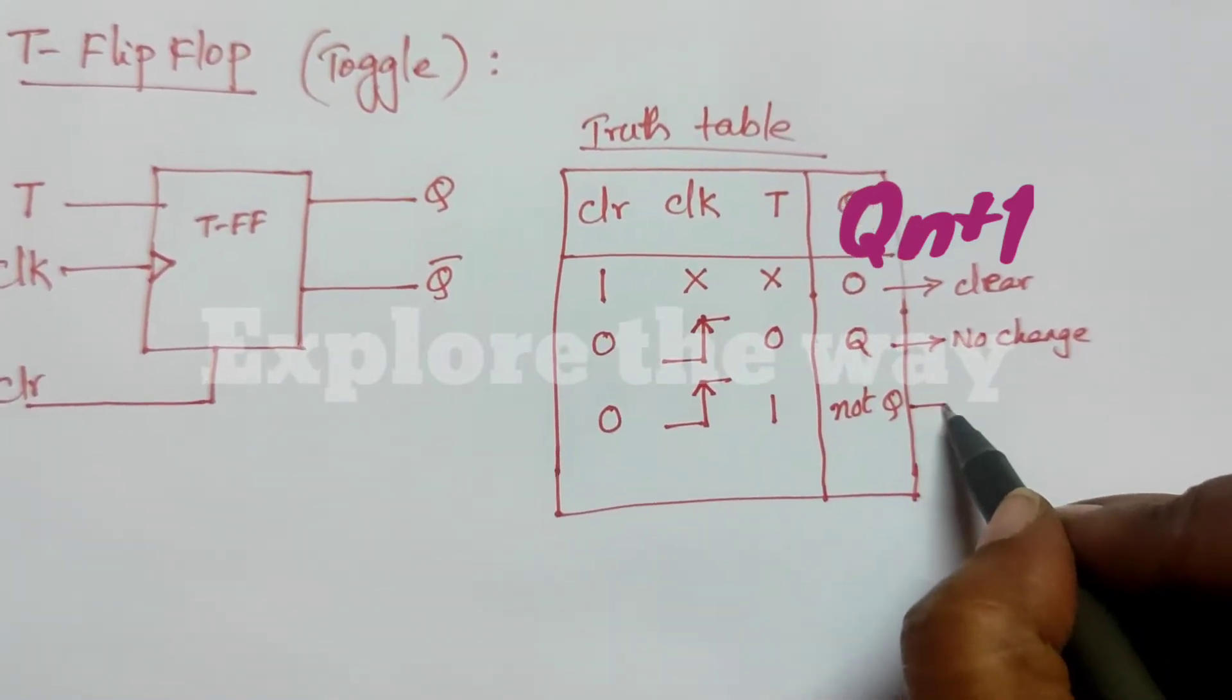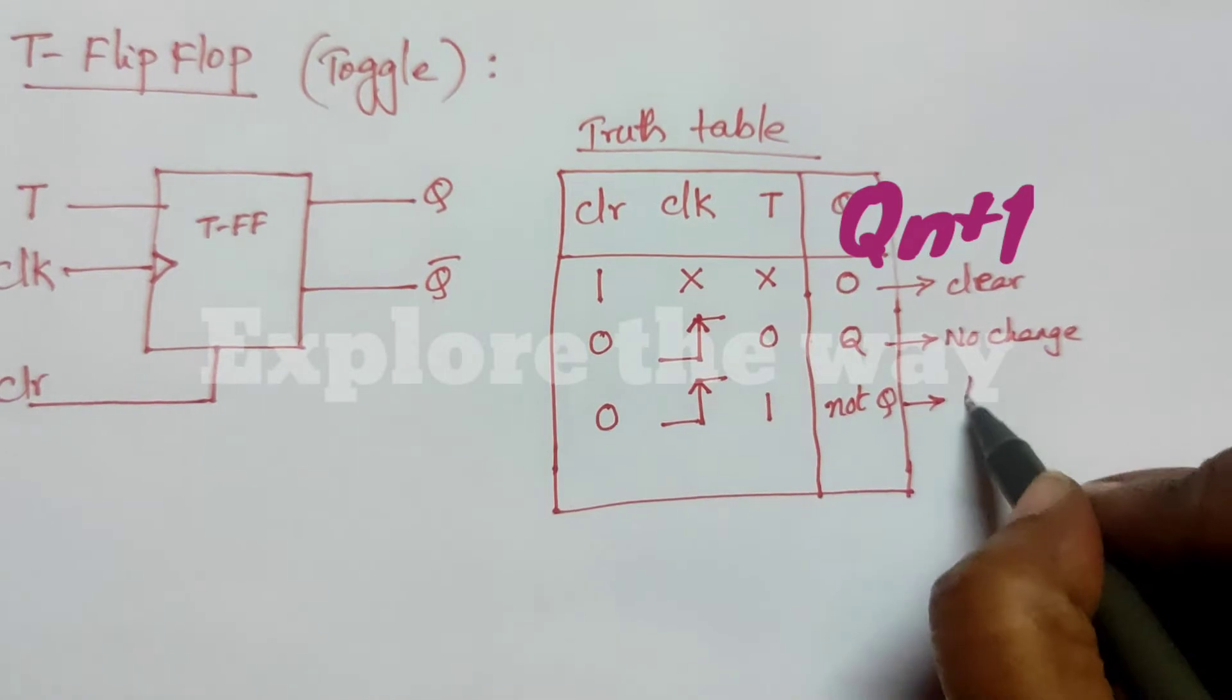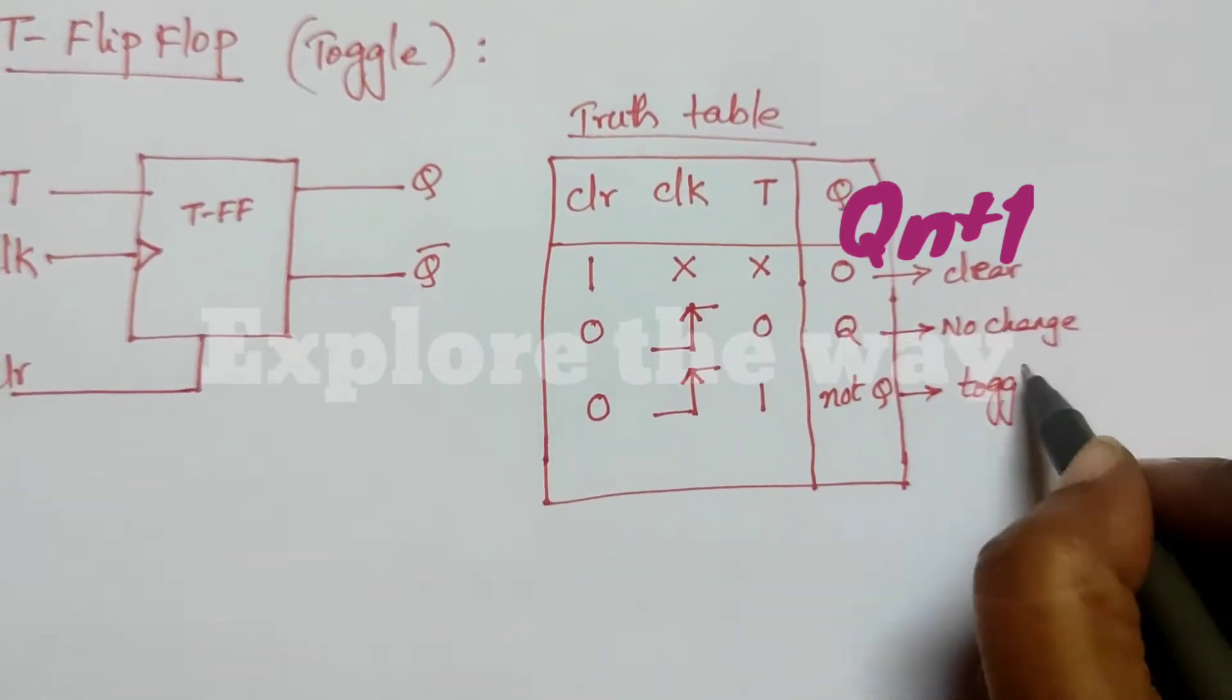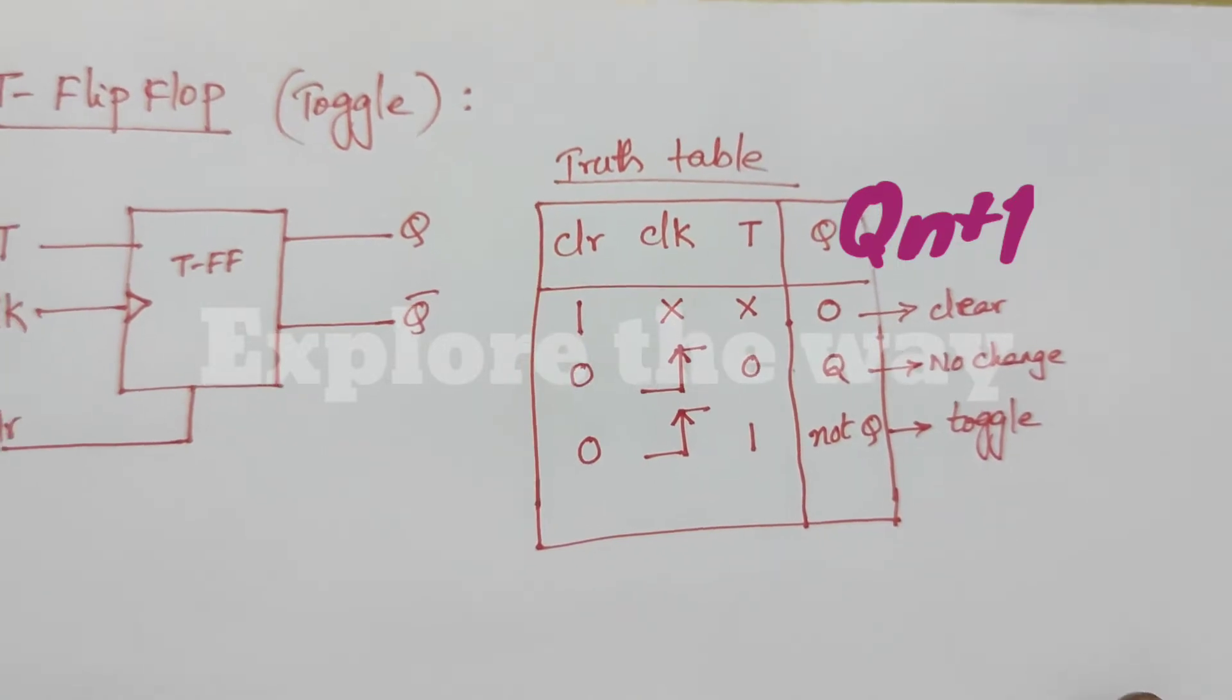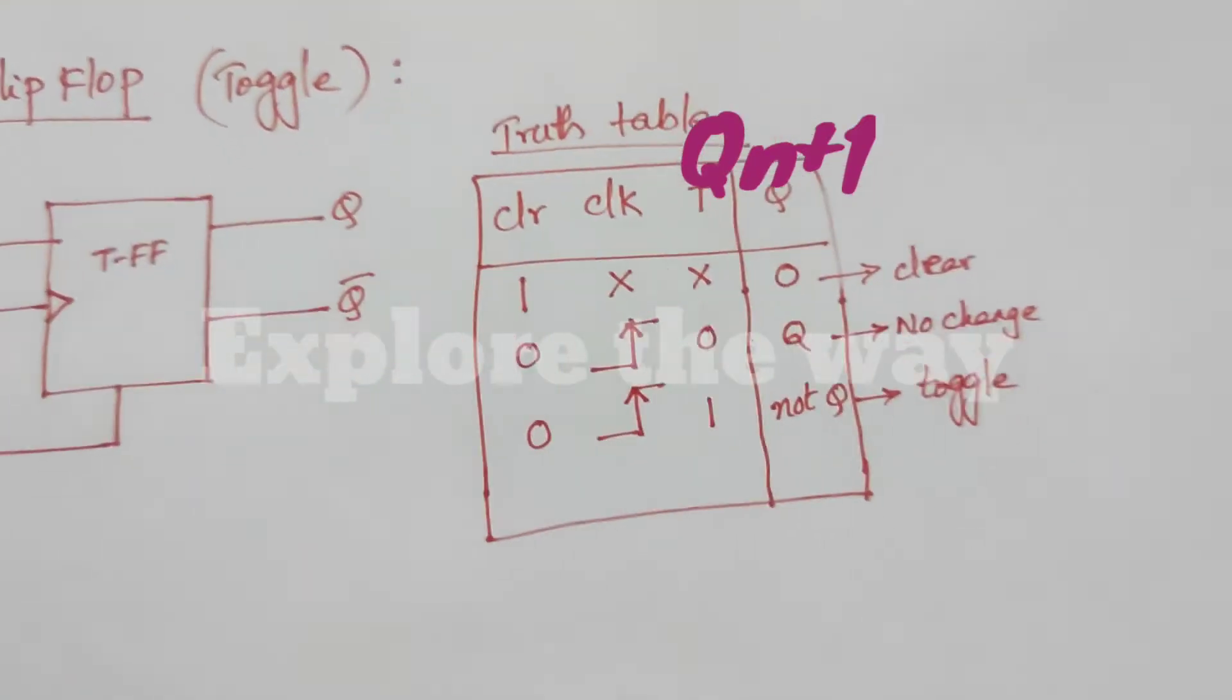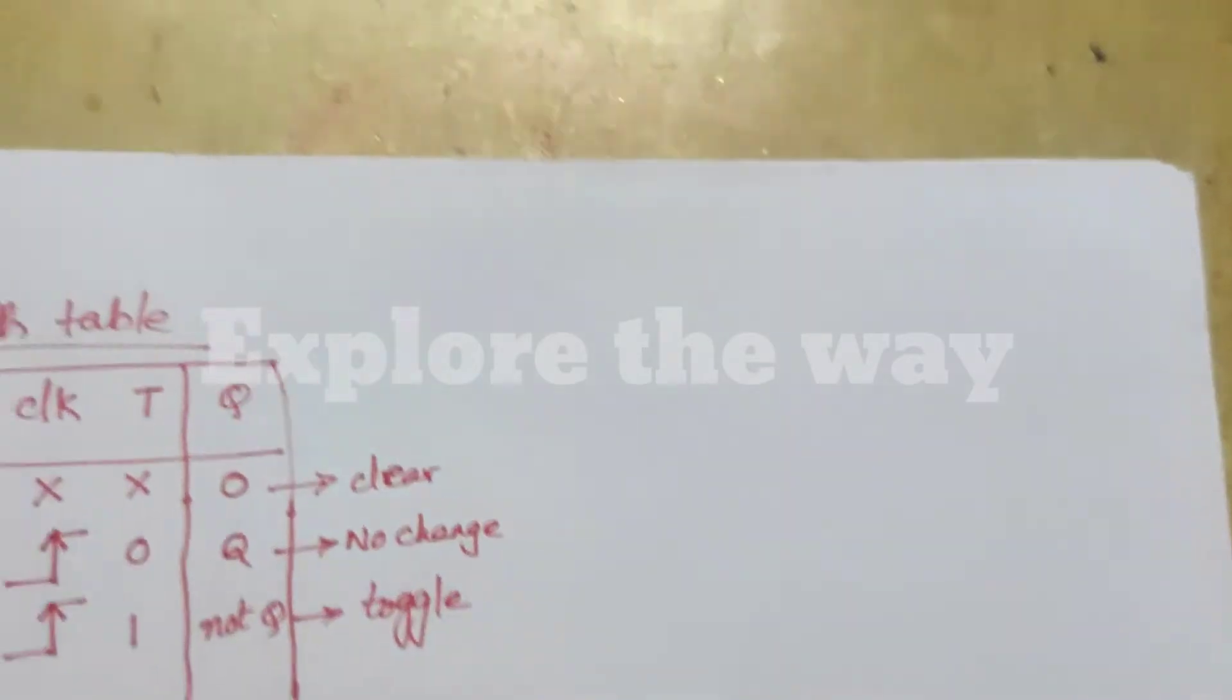This is the behavior of T flip-flop. Now let us write the VHDL code for this T flip-flop.